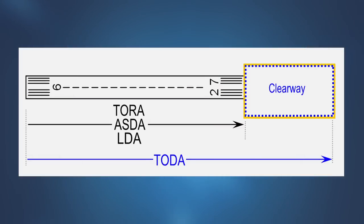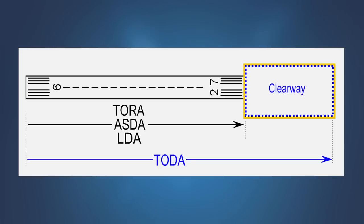Takeoff distance available is the takeoff run available plus the length of any remaining runway or clearway beyond the far end of the takeoff run available. The takeoff distance available is the distance declared available for satisfying takeoff distance requirements for airplanes where the certification and operating rules and available performance data allow for the consideration of a clearway in takeoff performance computations.